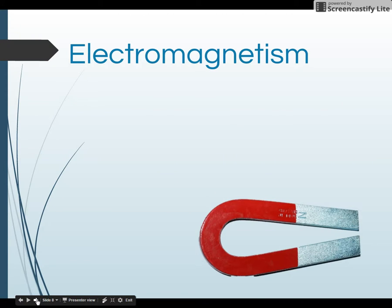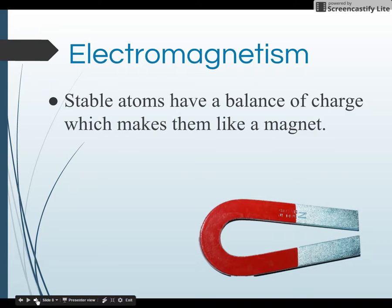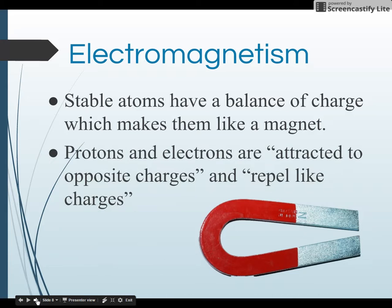Atoms also are electromagnetically stable. Atoms have a balance of charge which makes them like a magnet. So protons and electrons are attracted to opposite charges—that's what keeps the atom stable, because protons are positively charged and attracted to negatively charged electrons. So the positive and the negative are attracted to each other as opposite charges, but they repel like charges. So two protons, you get too many, they start to repel each other's charge. And electrons also will repel like charges.